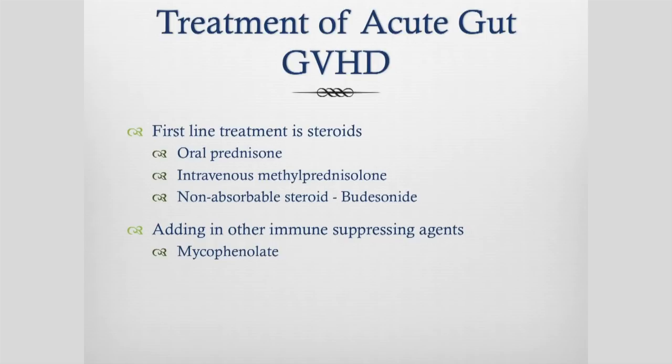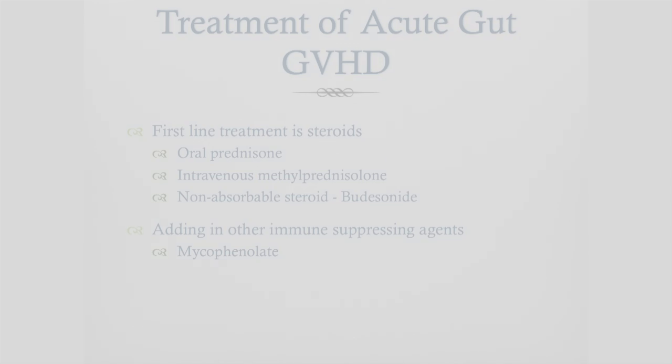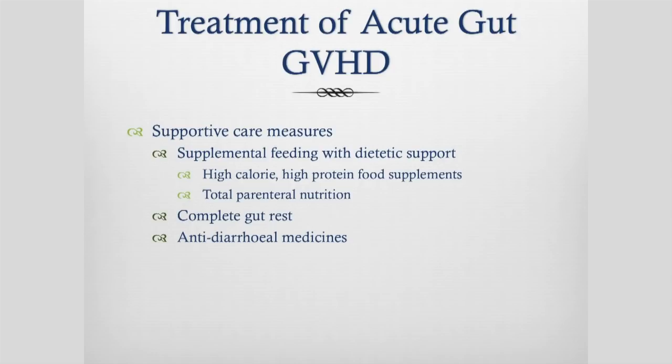We can also use budesonide, which is a steroid pill that you swallow where the steroid bathes your gut but is not absorbed into your bloodstream. We often add in other immune-suppressing medicines like mycophenolate. Supportive care measures are really important with gut GVHD — a lot of the time you're not able to absorb medicines or nutrients, so supplemental feeding is really important and our dietitian is particularly helpful. You may need high-calorie, high-protein food supplements, a lactose-free diet, or if you have bad gut GVHD you might need total parenteral nutrition through a drip. We often completely rest your gut and you may need anti-diarrhea medicines as well.